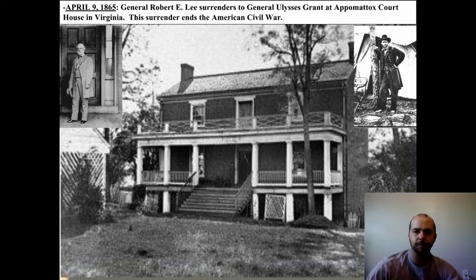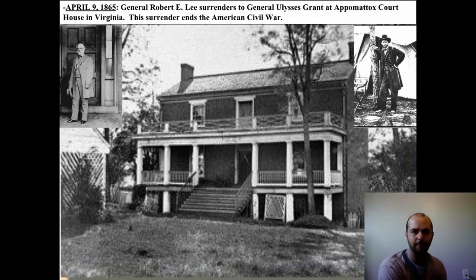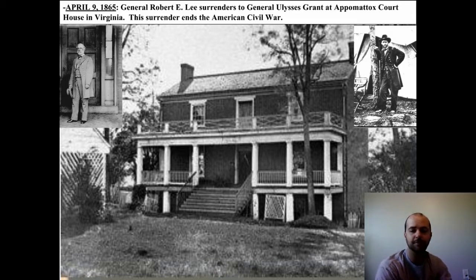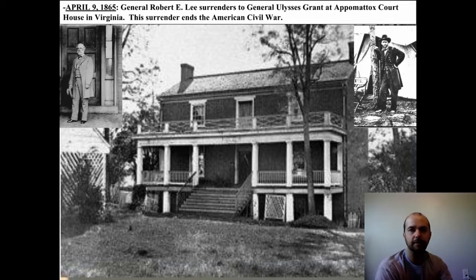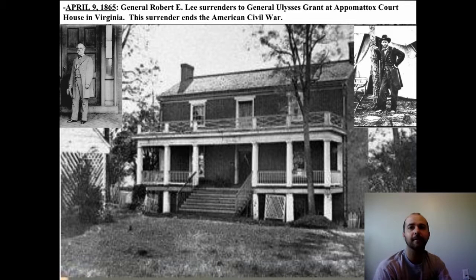We're going to talk about the results of the Civil War — how the nation was different, how it was scarred and damaged, and how our government tried to bring us all back together, bring the South back into the North, and make some semblance of equality. The goal was to heal those wounds from the Civil War, because there were over 600,000 casualties, and just years and years of hatred and death. We'll cover that in our next lecture video.